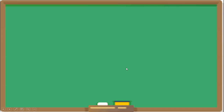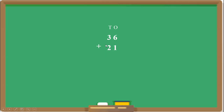Let's see one more example. Here we have the numbers 36 and 21. The 6 is at the 1's place and 1 is also at the 1's place. The 3 and 2 are at the 10's place. We start adding from the right side: 6 plus 1 is 7, then 3 plus 2 is 5. So the answer of 36 plus 21 is 57.